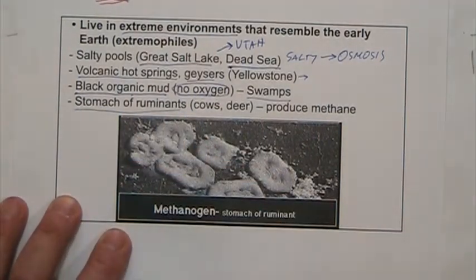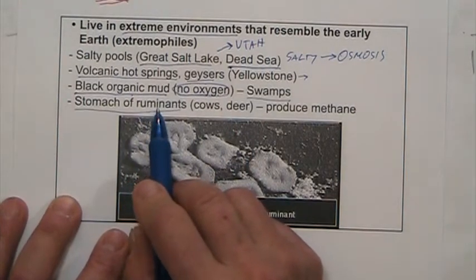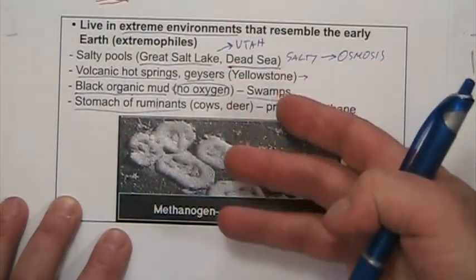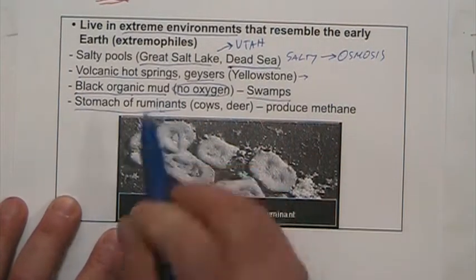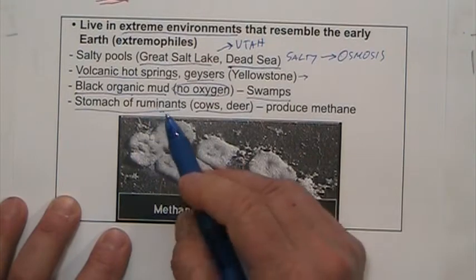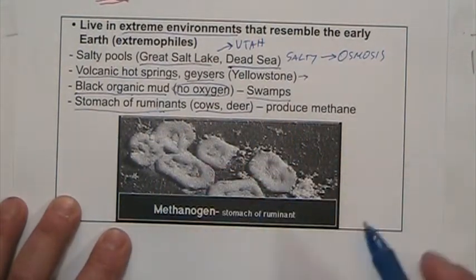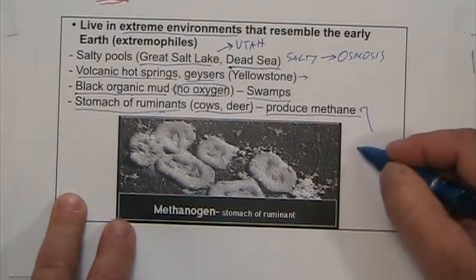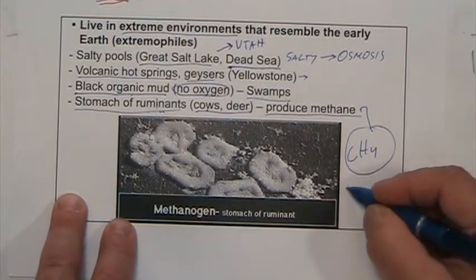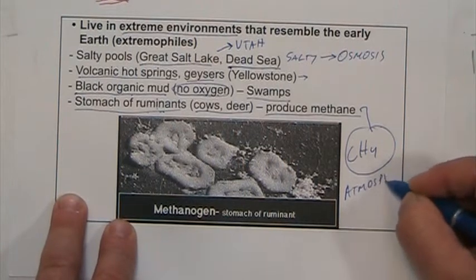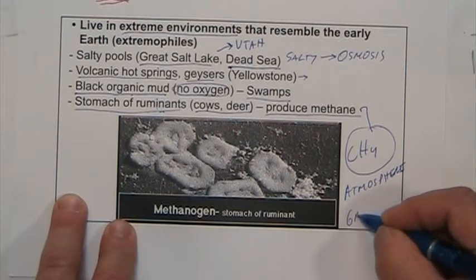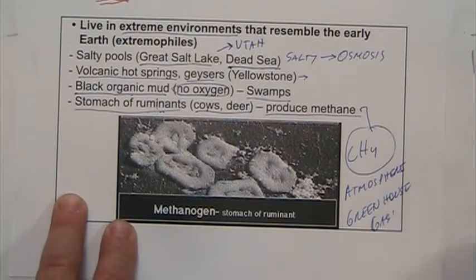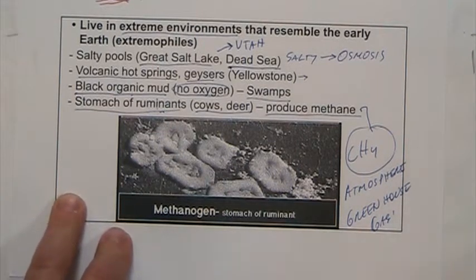Another interesting place is the stomach of ruminants — cows, deer, animals that chew, regurgitate, and keep chewing. In the digestive system of ruminants, these bacteria produce methane (CH4), which is released into the atmosphere. This is a greenhouse gas that contributes to the warming of the planet.